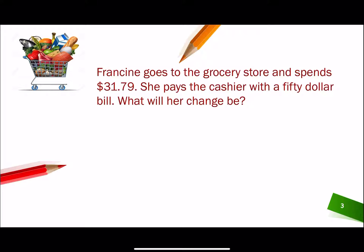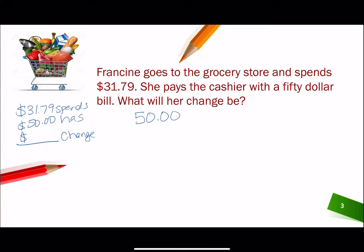We know that Francine spends $31.79 and she has $50. We want to know her change — how much did she get back. This is a subtraction problem, and it's a one-stepper because we already have all the information we need. So I could say $50 minus $31.79 and stack it.